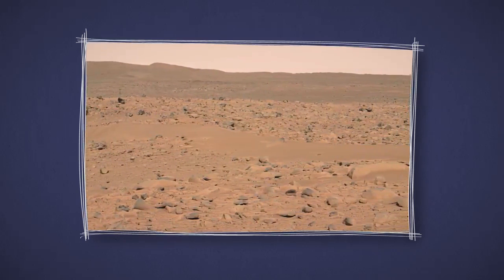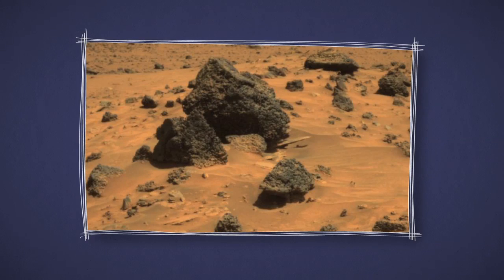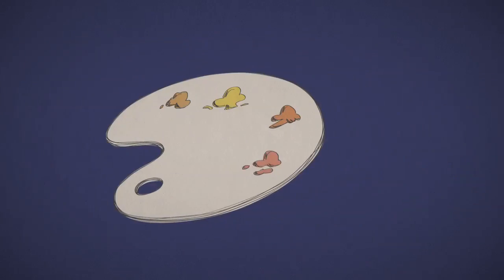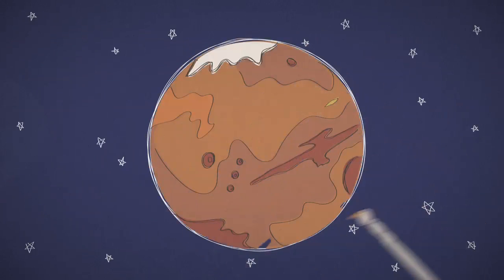Depending on what minerals are around, some landscapes can be more golden, brown, tan, or even a little greenish. So in fact, there are a lot of different colors on what we call the red planet.